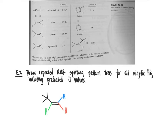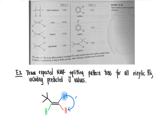We need to draw the expected NMR splitting pattern tree for all of these vinyl hydrogens in blue, red, and green, including the predicted J values. Taking the proton in blue as our first example, we would expect it to couple with the red proton that it is geminal to, and also with the proton in green that it is vicinal to. Since the blue and red protons are geminal, their coupling constant would be approximately 2 Hertz.